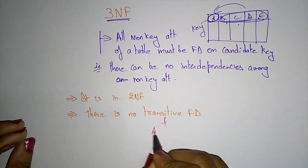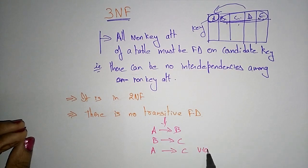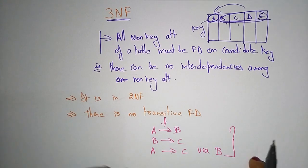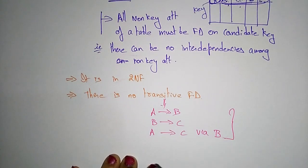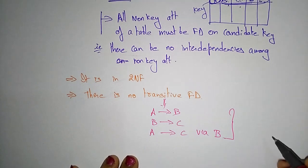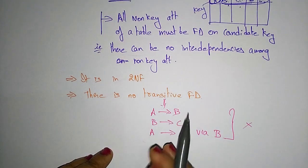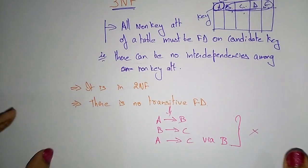What is transitive functional dependency? If A determines B, and B determines C, then A determines C via B - this is the transitive dependency formula. This condition must not exist in 3NF. Whenever a table is following transitive functional dependency, you have to convert that table into a non-transitive dependency. Let me take an example so you can clearly understand how to convert the table into 3NF.